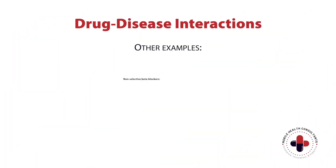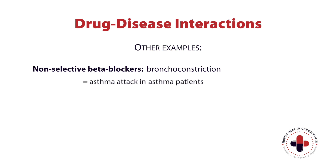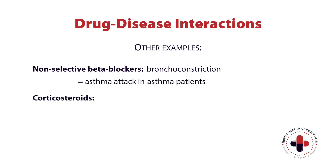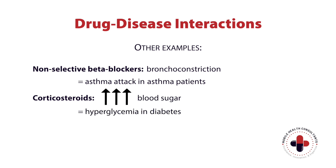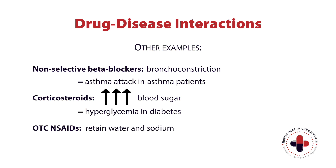Other examples could be non-selective beta blockers in patients with asthma, as they can cause bronchoconstriction and an asthma attack. Corticosteroids like prednisone can increase blood sugar, which would be a drug-disease interaction with diabetes. Or even over-the-counter NSAIDs like ibuprofen or naproxen, which can cause the body to retain sodium and water and contribute to fluid overload in heart failure patients.